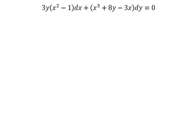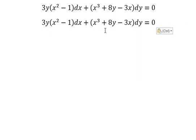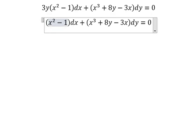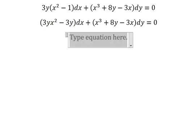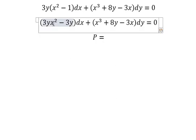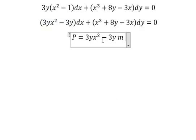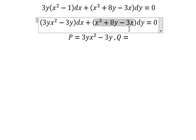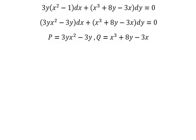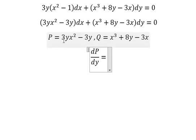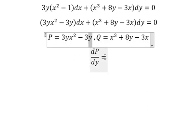Hello everybody, today I want to show you how to answer this problem. We have three y multiply this one. I will put b equals to this one and q equals to this one. We have the x, that means we need to do first the partial derivative of b with respect to y. This one we have number one, this one we have number one.